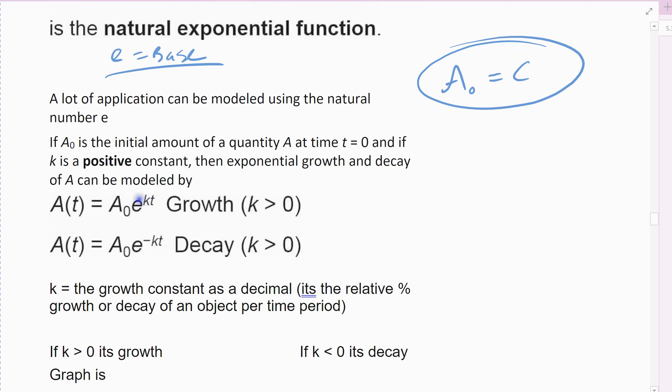If it's growth, k is positive, the exponent is positive. I guess I should say k is always positive, but this part comes out positive. If it's decay, this is negative. Remember, negative really means it's that fraction: A naught times 1 over e raised to the kt. But we don't like to write it as the fraction, we like to write it as the negative exponent, but that's really what it means—so it's decay.